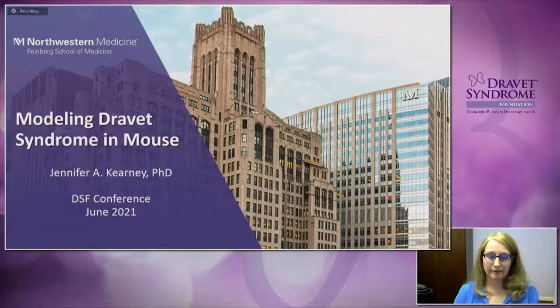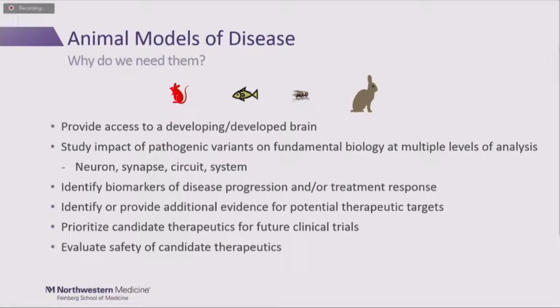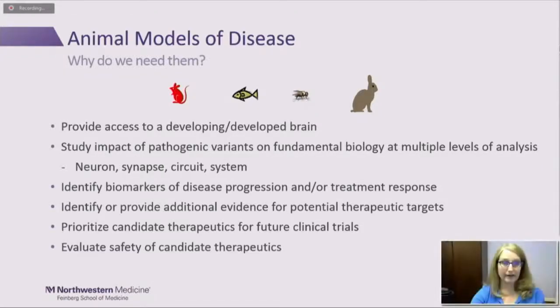Good afternoon. It's my pleasure to talk to you today about some of our work modeling Dravet syndrome in mouse. I first wanted to start off talking a little bit about animal models of disease in general and why we need them. You've heard this morning about how we can learn a lot from studying patients, which are in essence the best system to learn about Dravet syndrome in humans. However, at some point in time, we need animal models so that we can do more invasive studies or things where safety might be a risk.